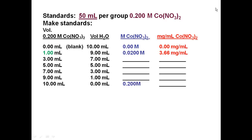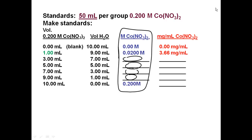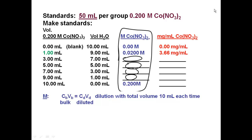Notice that the volumes always add up to ten milliliters total. To calculate the molarity of each diluted standard, use CV = CV: bulk concentration times bulk volume equals diluted concentration times total volume. The bulk concentration is 0.2 M, the bulk volume changes (1, 3, 5, 7, or 9 mL), the diluted concentration is what we're looking for, and the total volume is always ten milliliters.